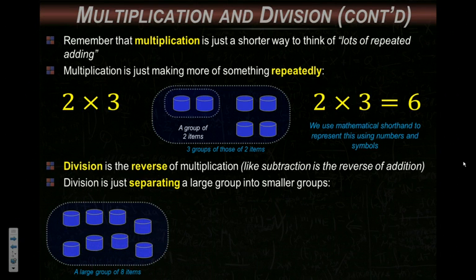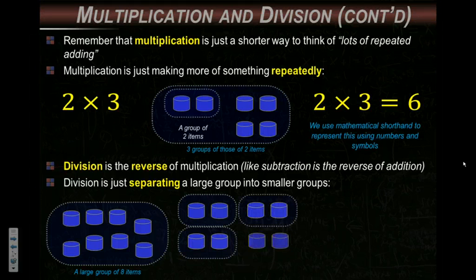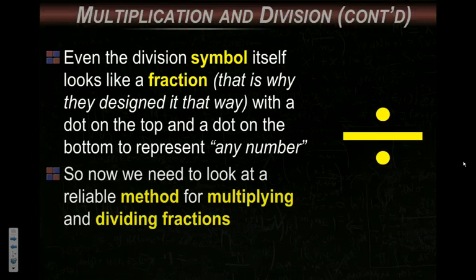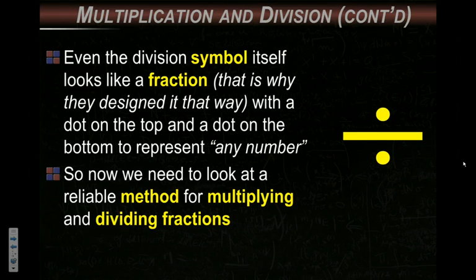Division is the reverse of multiplication, just like subtraction is the reverse of addition. So what you have here is you have a group of 8 items. And when you divide something, you are separating it into groups again. So I'm dividing those 8 items into 4 groups of 2. Or in other words, 8 divided by 2 is 4. This is not revolutionary math. You guys should know this. As I've said before, even the division symbol itself, if you look at that symbol, it looks like a fraction where this dot and that dot could be a number. So division and fractions are essentially the same thing.